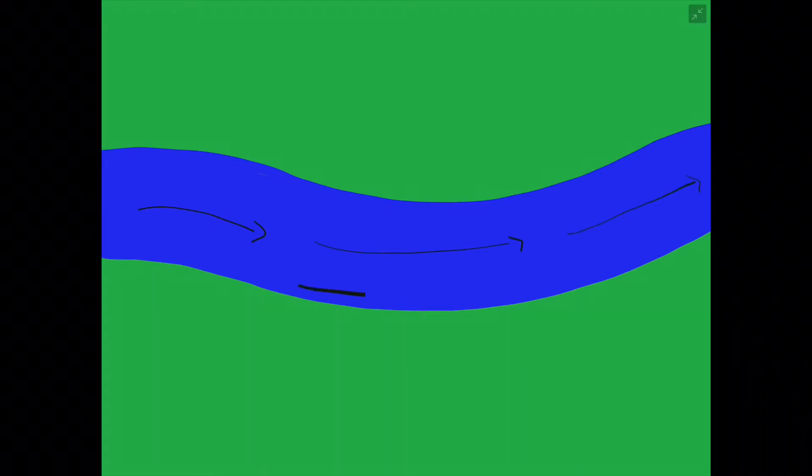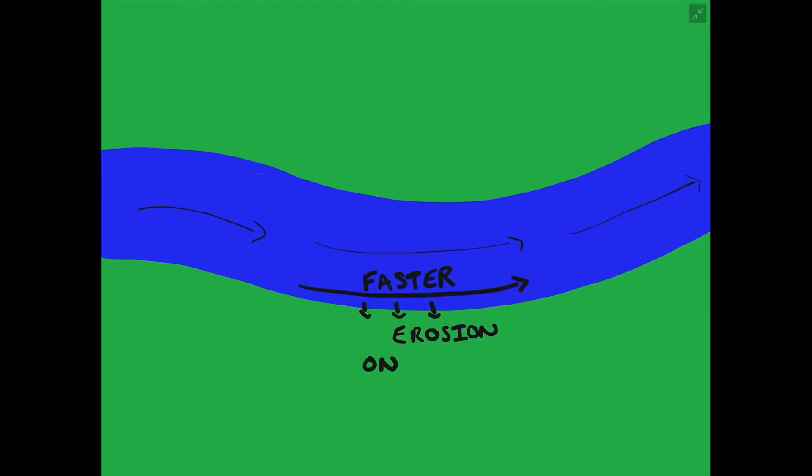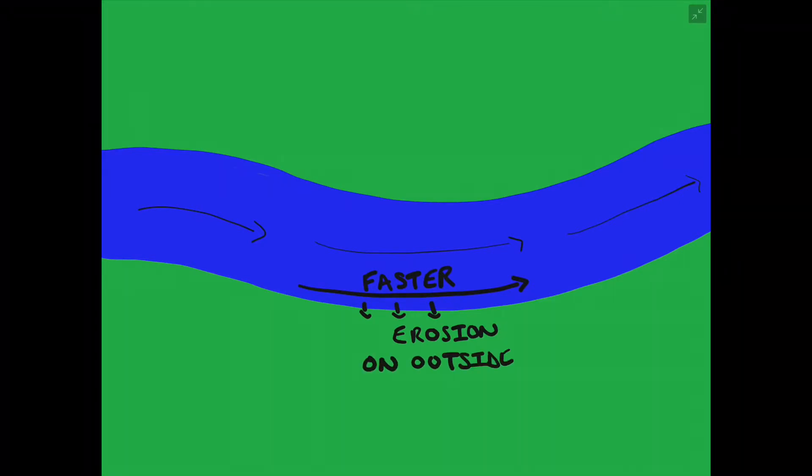So let's just quickly recap what a meander actually is. A meander is a bend in the river and we have a fast current flowing on the outside bend of the meander which causes erosion on this outside bend, whereas there is a slower current on the opposite side of the meander creating deposition which is found on the inside bend of the meander.